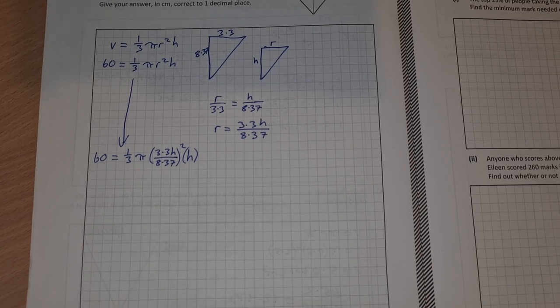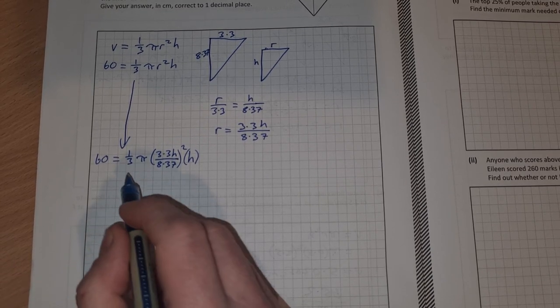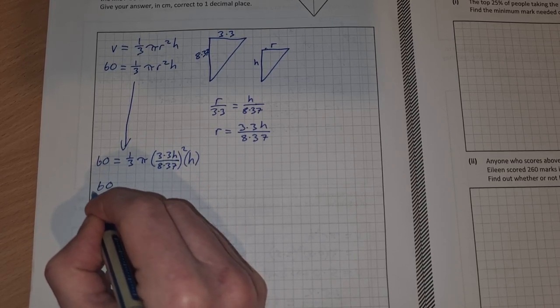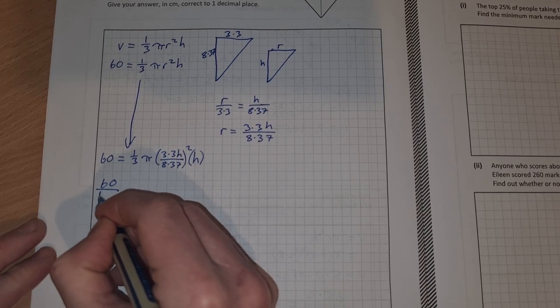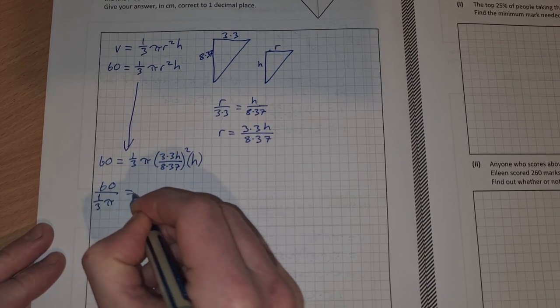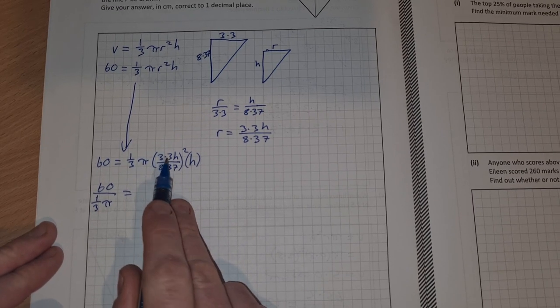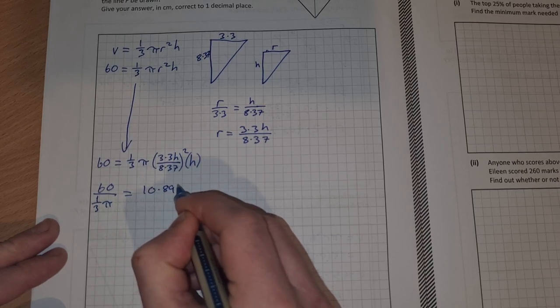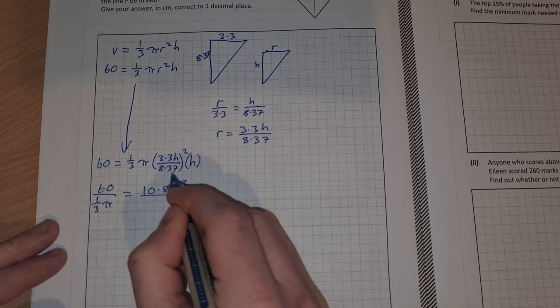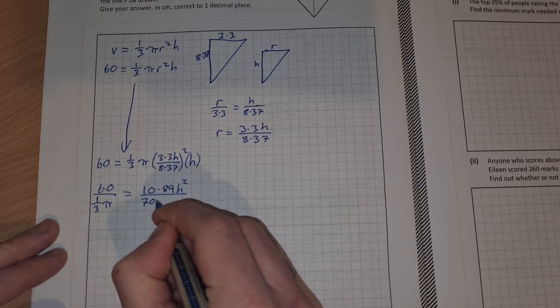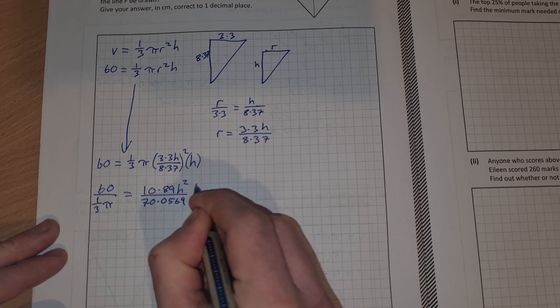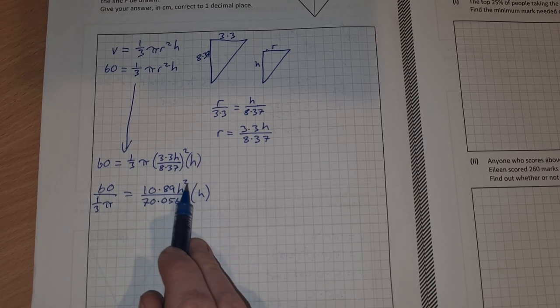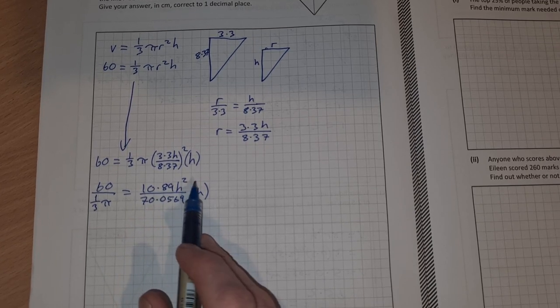If we work through this equation, we should be able to solve for h and then find our unknown x. To solve this, let's divide both sides by ⅓π. So 60 over ⅓π equals, now I'm going to multiply all this out. Square 3.3 to get 10.89h², and then square 8.37 to get 70.0569, and this is all multiplied by our h. Then h by h will be h³ on the top there.